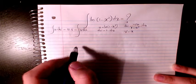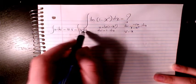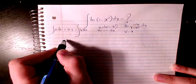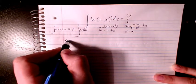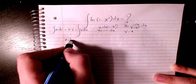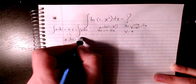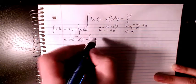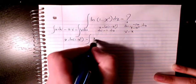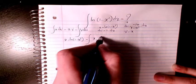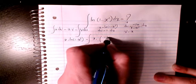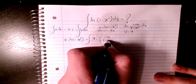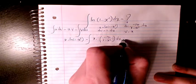So then I can write u times v, which is x times ln(1 minus x squared), minus v times du, which is x times negative 2x over (1 minus x squared) dx.